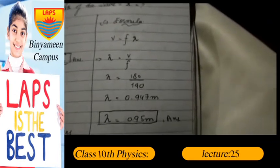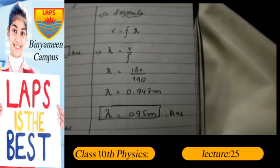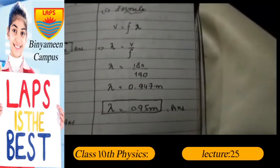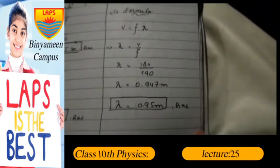Lambda = v/f. Lambda = 180/190 = 0.947 meters. Lambda = 0.95 meters. This is the answer to the question.